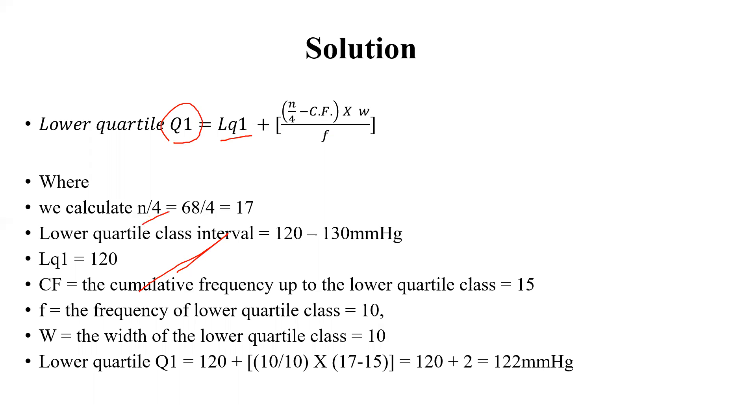Then calculate N by 4, 68 divided by 4 is 17. Then we have to go to the cumulative frequency column, then lower quartile class interval, likewise median we have done.